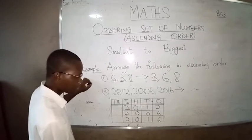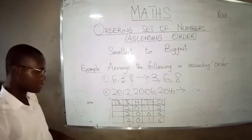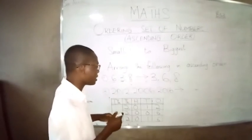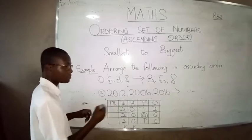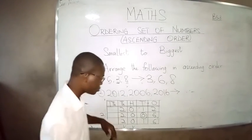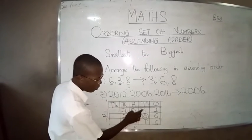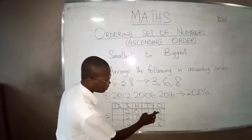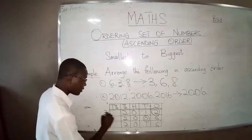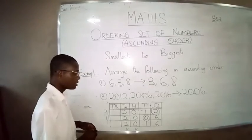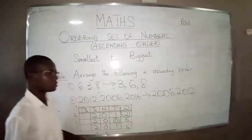The next column, you notice that some are one and the other one is zero. So zero and one — zero is smaller than one. It means the number that has zero in that place is the smallest. That number is two thousand and six. So 2006 comes first. Now for the remaining two numbers, they both have one in that place, so we move to the next column. This one has six and this one has two — two is smaller, so 2012 will be the next number to write.